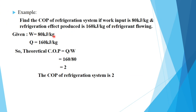Given: W = 80 kilojoules per kg, and capacity of refrigerator Q = 160 kilojoules per kg. Using the formula COP = Q divided by W = 160 divided by 80 = 2. So the coefficient of performance of the refrigeration system is 2.